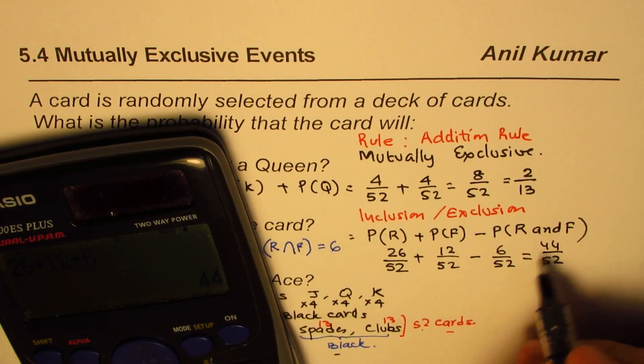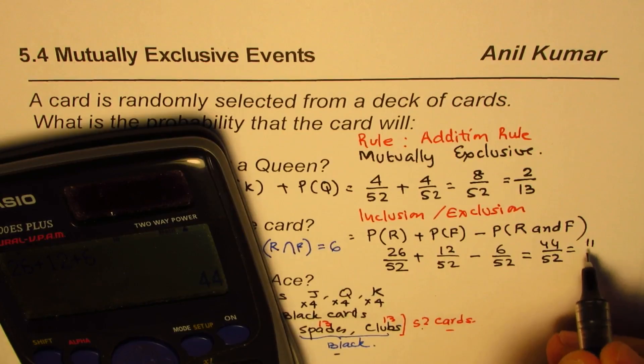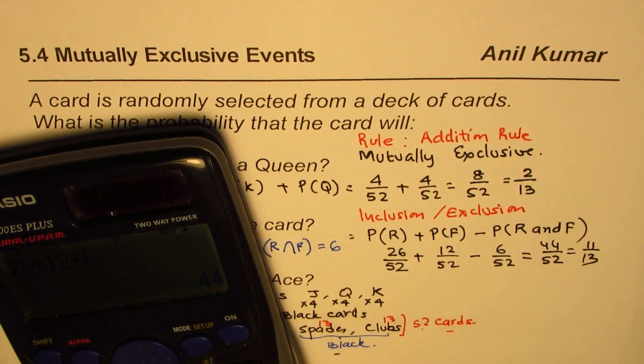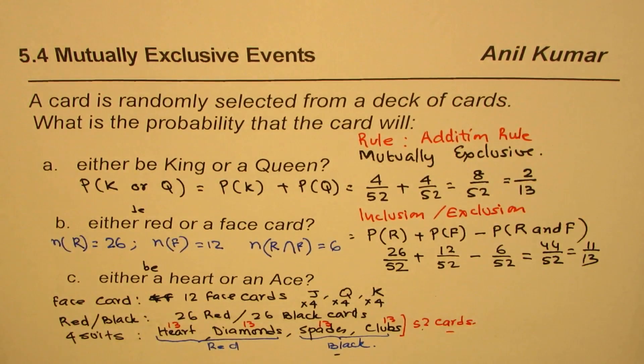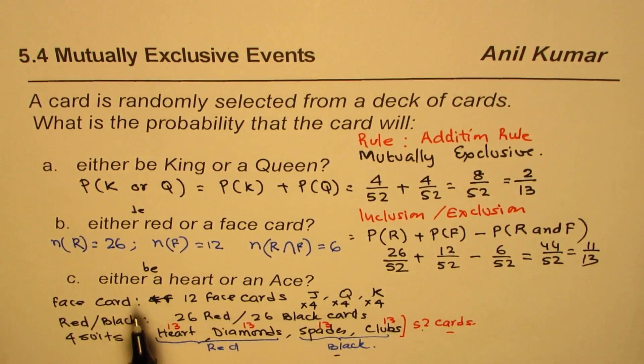We can divide both by 4, so we have 11 over 13 as the probability of getting either red or a face card. I hope that's clear.